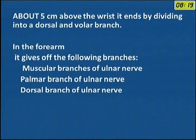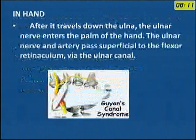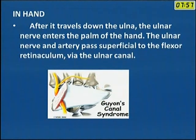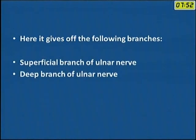In the forearm it gives three important branches: the muscular branches, the palmar branch of the ulnar nerve, and the dorsal branch of the ulnar nerve. In the hand, the ulnar nerve enters the palm. The ulnar nerve and artery pass superficial to the flexor retinaculum through a canal called Guyon's canal. It is above the flexor retinaculum. It gives two branches: the superficial branch and the deep branch, which supplies the adductor pollicis and the thenar remnants.